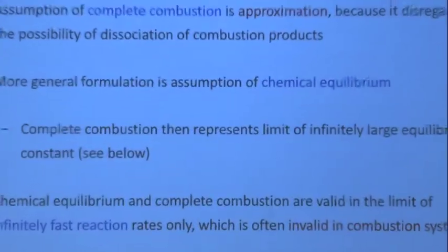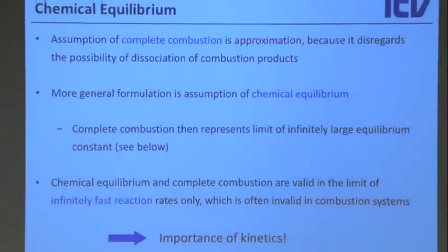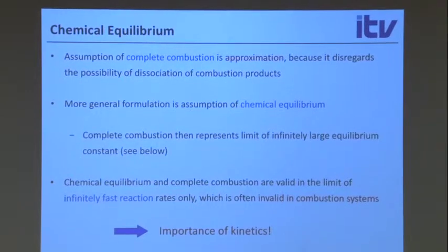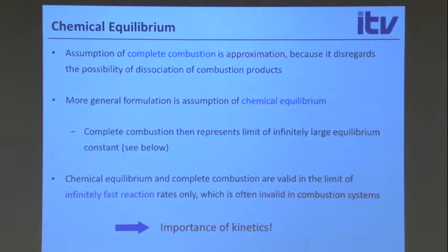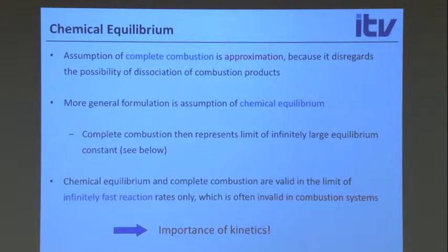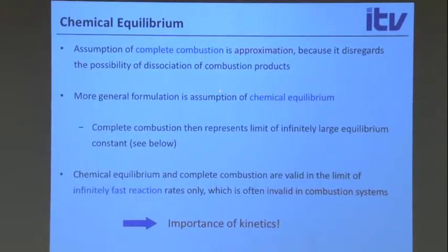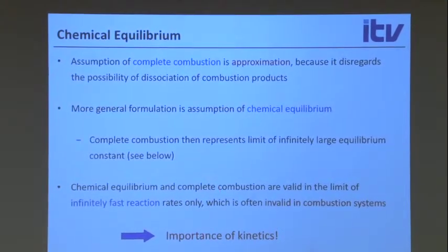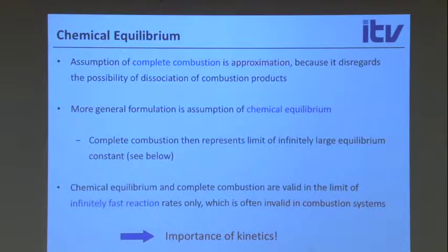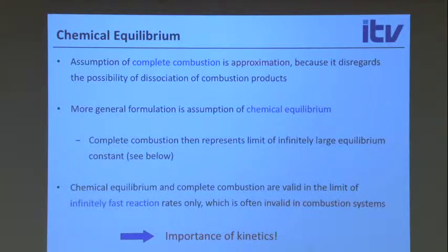Now we're going to look at chemical equilibrium. Yesterday we started talking about what equilibrium means. Chemical kinetics systems move towards equilibrium. The equilibrium gives you a nice exact limit — it's something you would really see in nature after infinitely long time. Very often chemical systems have a certain departure from equilibrium, and that is controlled by kinetics, but it's still interesting to look at chemical equilibrium as an approximation to what you see in a flame.